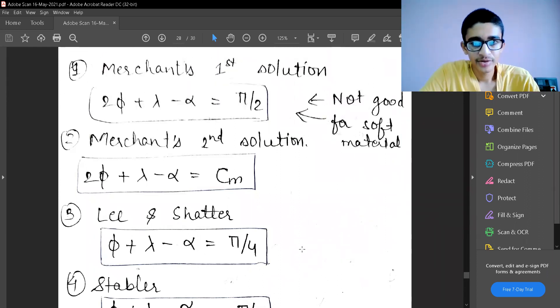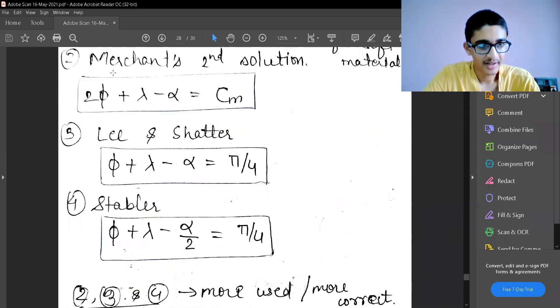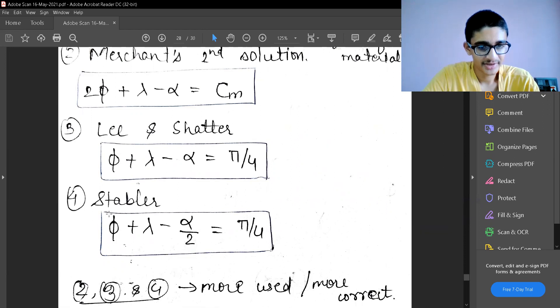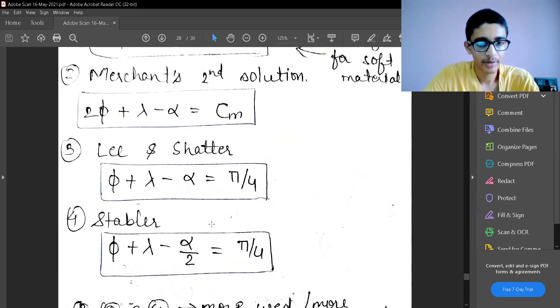The first Merchant solution is not good. It is more applicable to softer materials such as plastics which have highest strains possible. The other three solutions—Merchant's second solution, Lee and Shaffer's, and Stabler solution—are more used in industry and they are more correct or more realistic assumptions of whatever modeling which has taken place. So we can end over here.